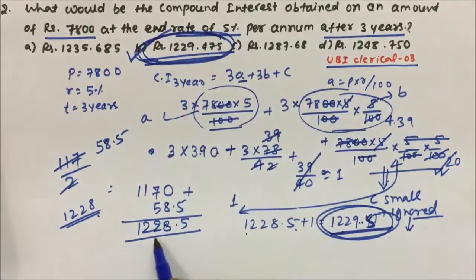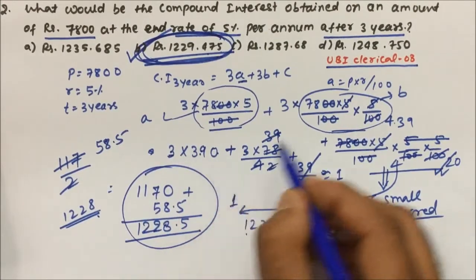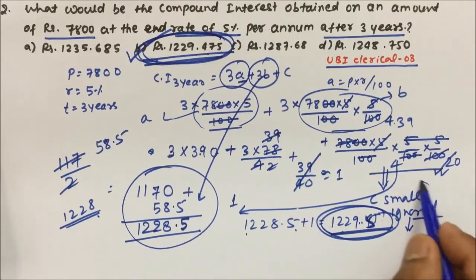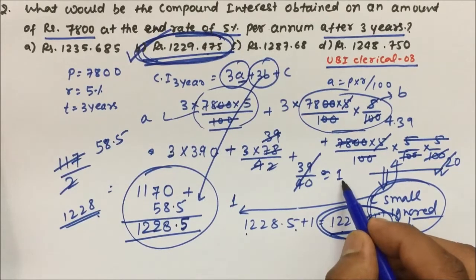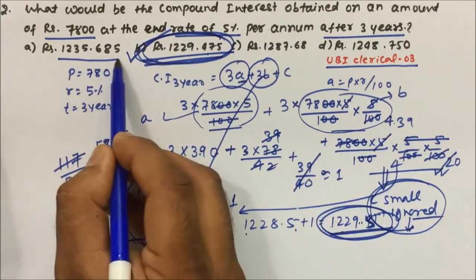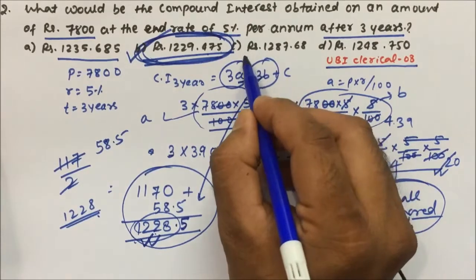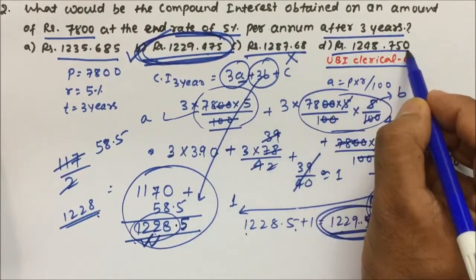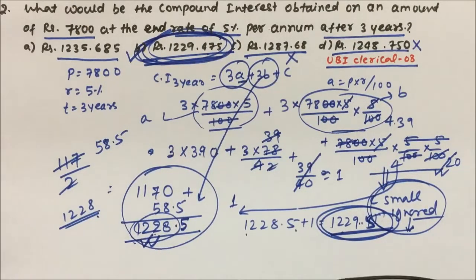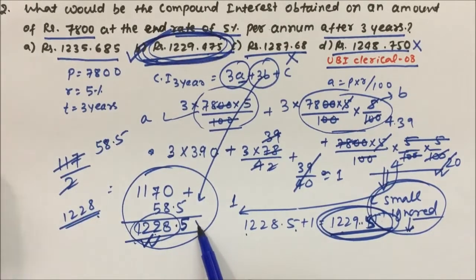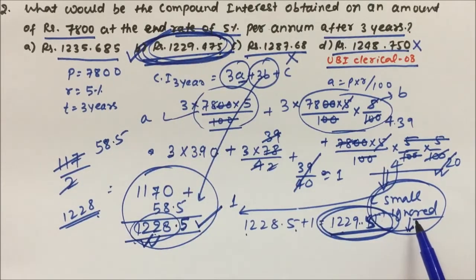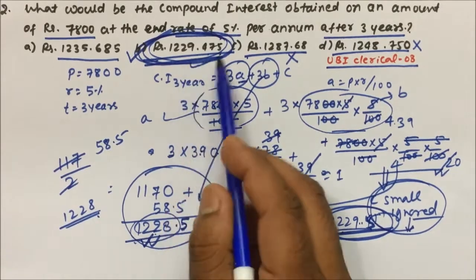After adding the first and second values, 3a plus 3b, we get 1228.5, and the c value will be very small — near to 1 or less than 1. Checking options: 1235.685 — no; option C 1287 — too far; option D 1248 — too far. Only option B 1229.475 is very near to 1228.5. When you add c you get the exact value, so the answer is option B: 1229.475.